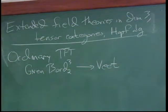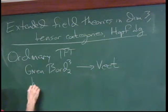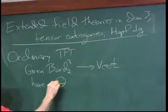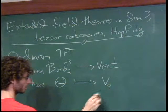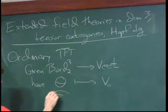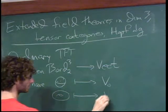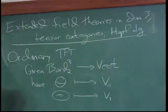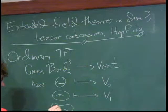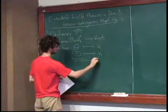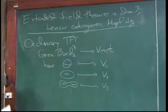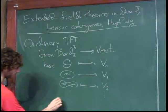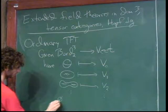Let's think about what kind of data that provides. We have some vector space associated to the sphere — call it V₀ — and some vector space associated to the genus-one surface and genus-two surface, and so on. So we have this whole collection of vector spaces. What three-dimensional bordisms do we have?